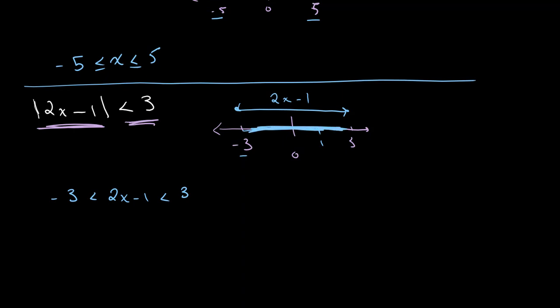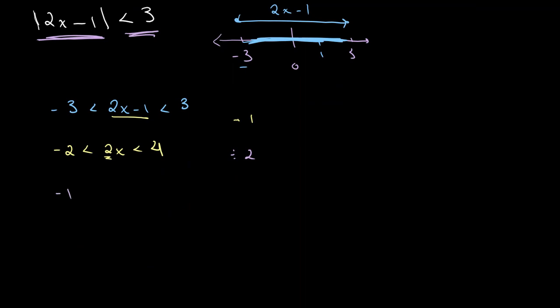With this knowledge we can say that 2x minus 1 will be found between negative 3 and 3, so it'll be greater than negative 3 and less than 3. All we need to do now is simple algebra to get x alone. Adding 1 gives us negative 2 is less than 2x which is less than 4, then dividing by 2 gives us negative 1 is less than x which is less than 4.